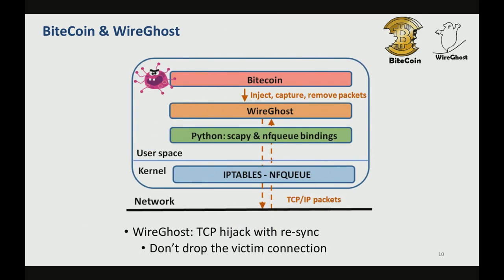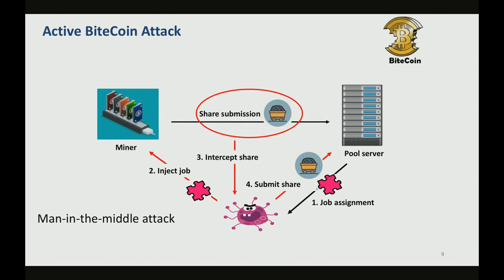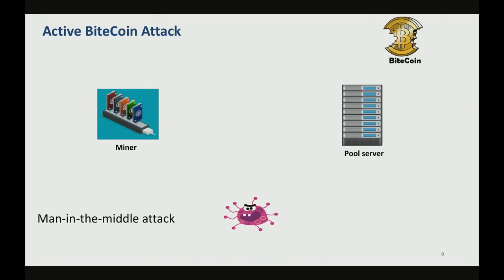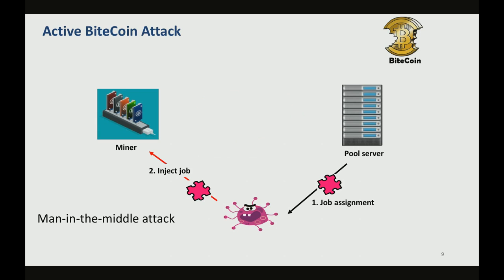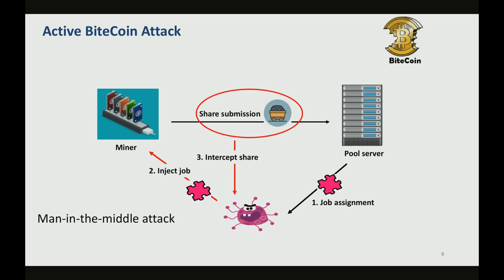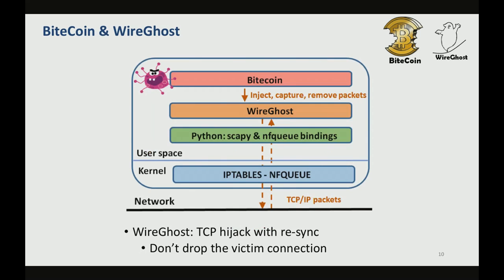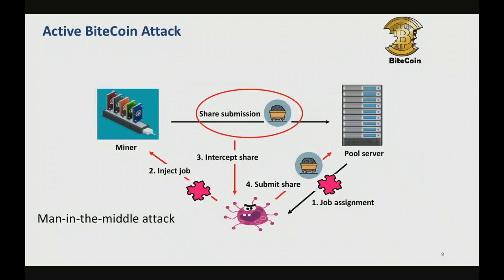The last attack I would like to talk about is this active attack. Essentially, it starts with the adversary obtaining a job assignment from the pool server and injecting this assignment into the miner, making it believe that it comes from the pool server. As soon as the miner submits this share, the adversary intercepts it and submits it to the pool server as if it was from the adversary, essentially claiming credit for it.